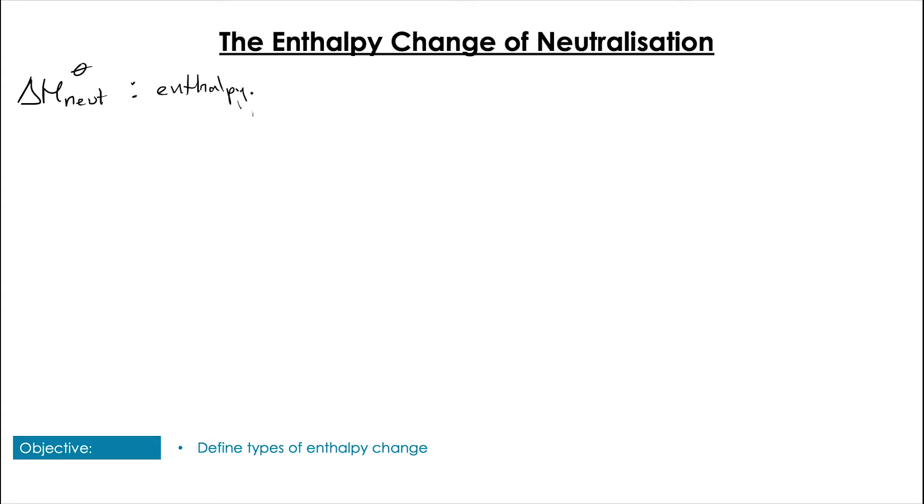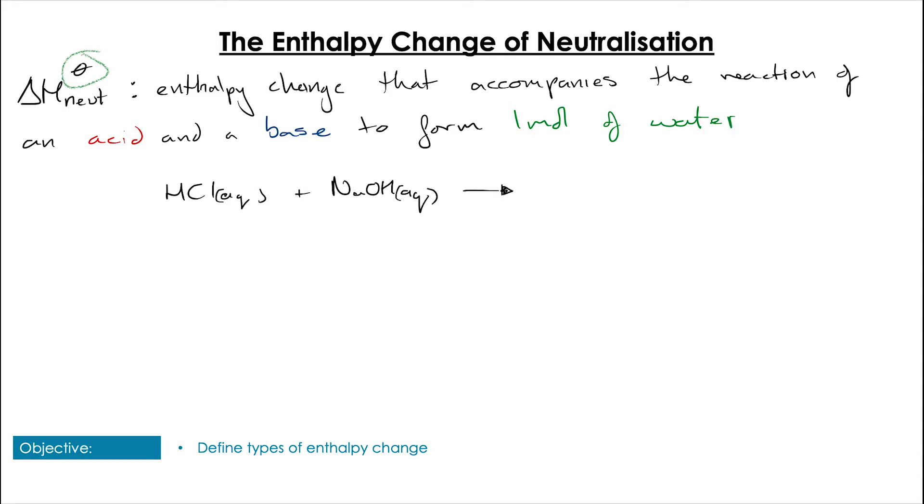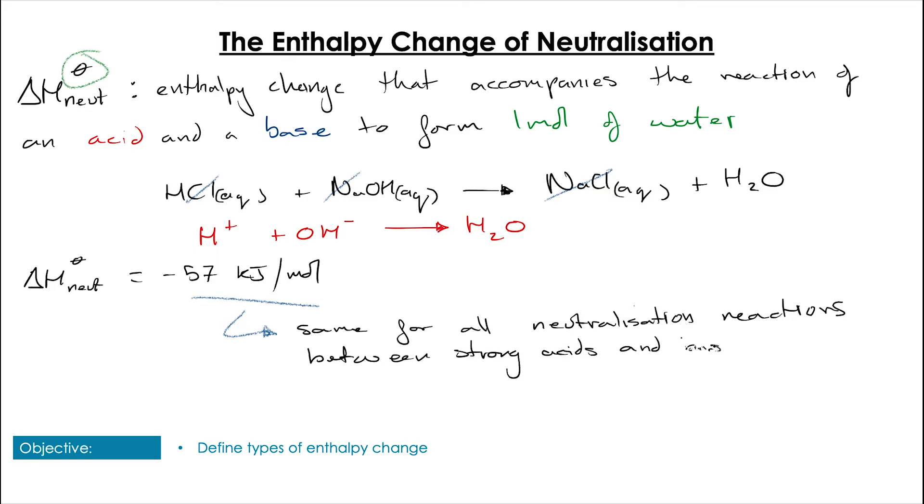These definitions can be quite specific, and that is true of the enthalpy of neutralization also. This is the enthalpy change associated with the production of one mole of water when we react an acid and a base. An example of this might be HCl and NaOH produce NaCl plus H2O. The key here is that it's actually the number of moles of water that are produced that determine the definition. If we look at the underlying ion equation, we see it's just H+ plus OH- forming a single molecule of H2O. The value is always the same at -57 kJ/mol, at least for the reactions of strong acids and bases.